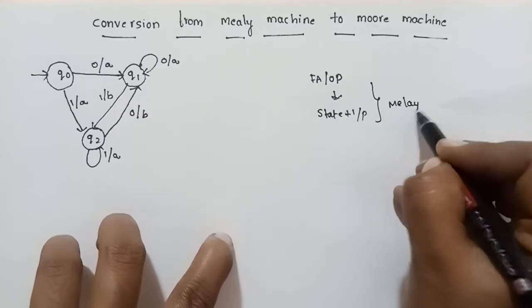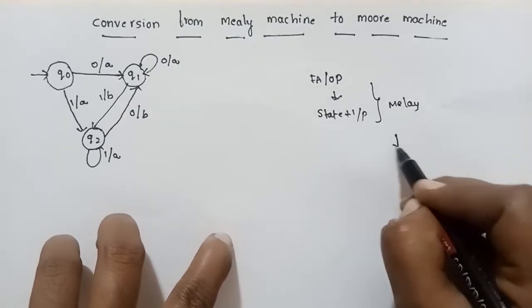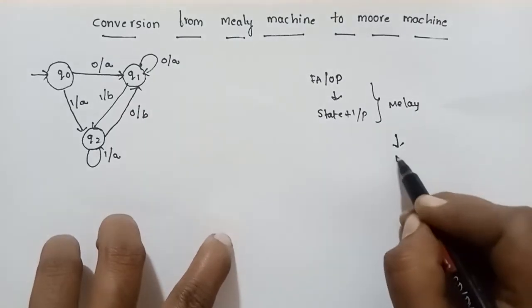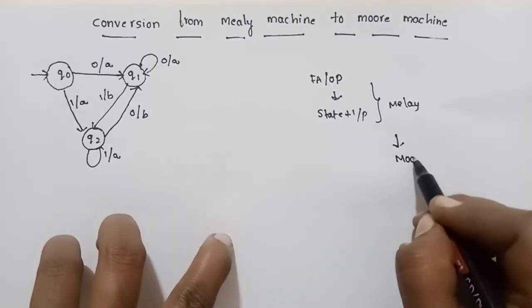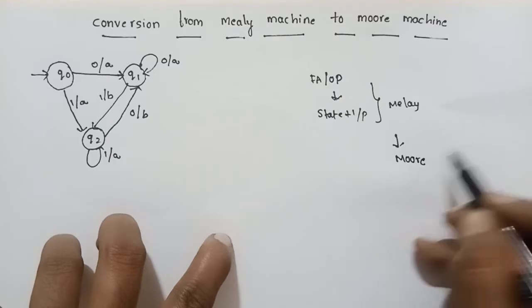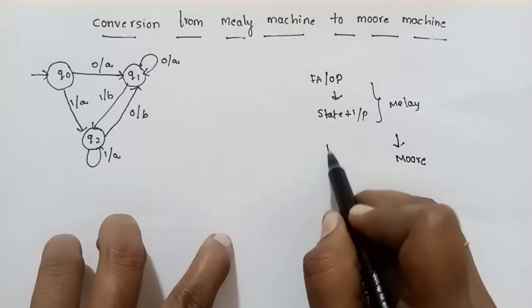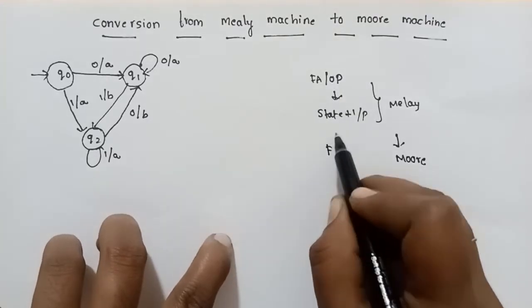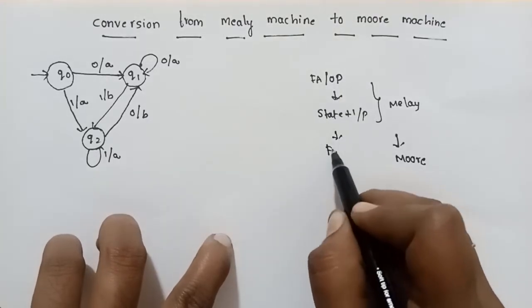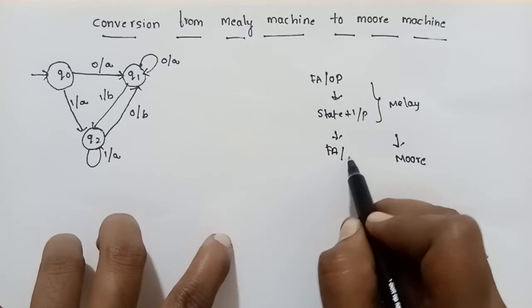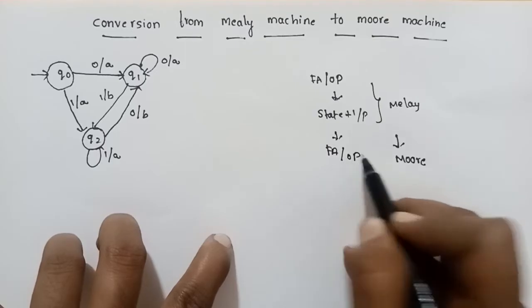Now I am going to discuss the Moore Machine. In a Moore Machine, the output is also a Finite Automata with Output, but the output depends only on the state.